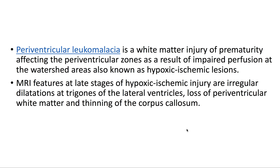Also known as hypoxic ischemic lesions, MRI features at late stages of hypoxic ischemic injury are: irregular dilatations at the trigones of the lateral ventricles, loss of periventricular white matter, and thinning of the corpus callosum.